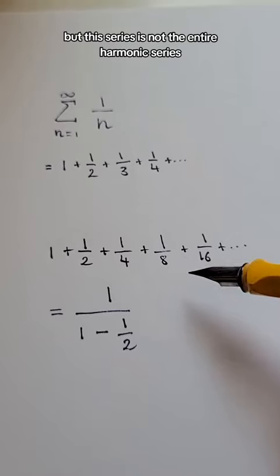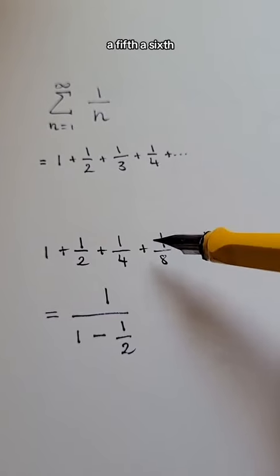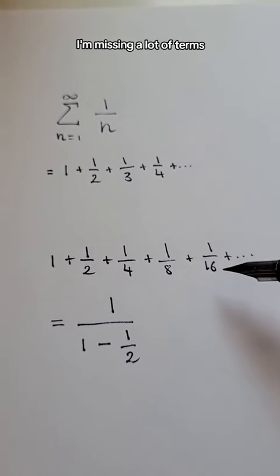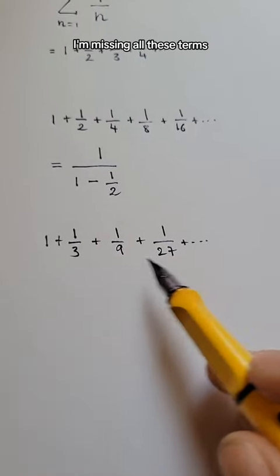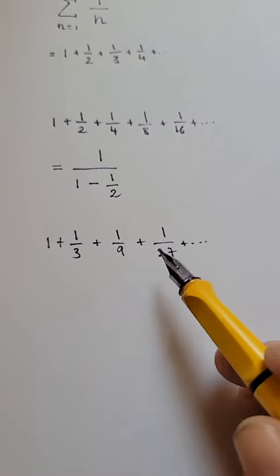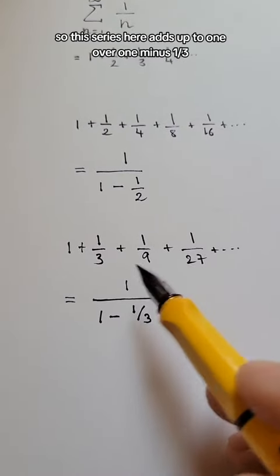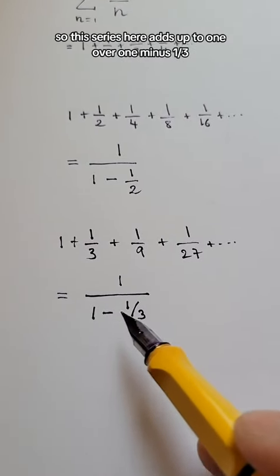But this series is not the entire harmonic series, because, well, you can see I'm missing a third, a fifth, a sixth. I'm missing a lot of terms. So, for example, I'm missing all these terms, the third plus ninth and 27th and so on. But this one is also a geometric series. So this series here adds up to 1 over 1 minus 1/3.